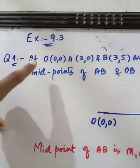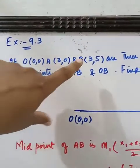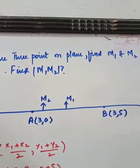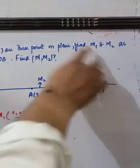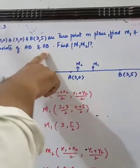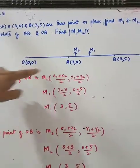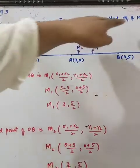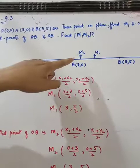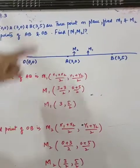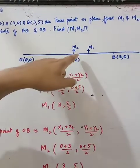Question number 4: If O(0,0), A(3,0) and B(3,5) are three points on a plane — find M1 and M2 as the midpoint of AB and midpoint of OB respectively. Pehle plane banaya: O point hai, A hai, B hai. M1 midpoint of AB hai aur M2 midpoint of OB hai.